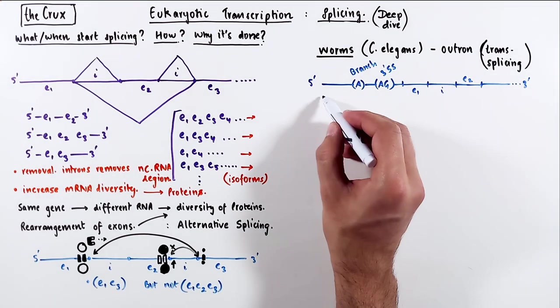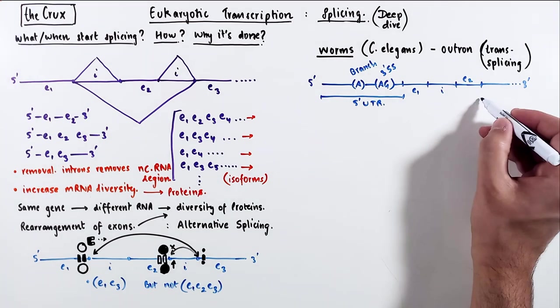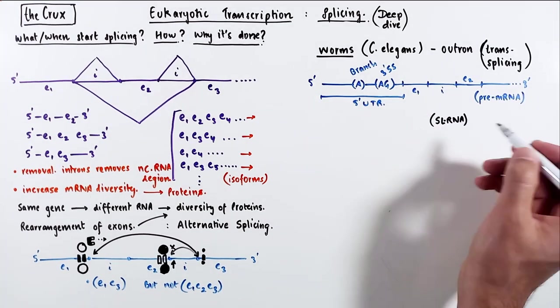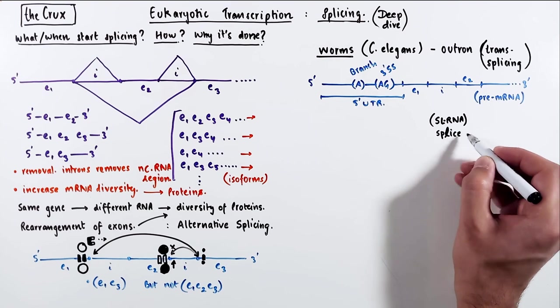Consider this pre-mRNA. In this pre-mRNA, the 5' UTR has a branch point and a 3' splice site.